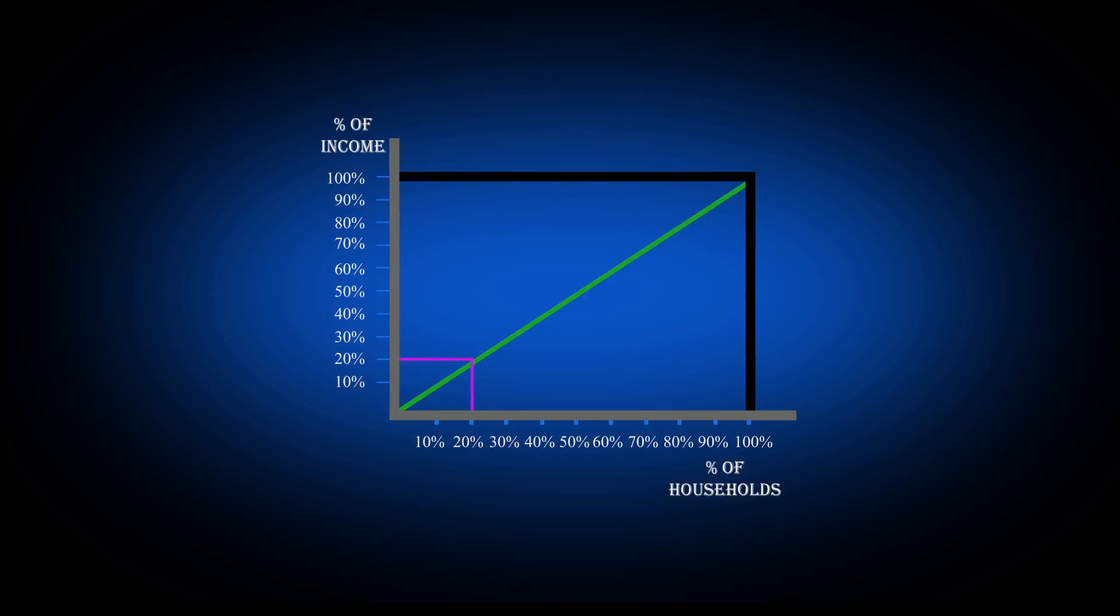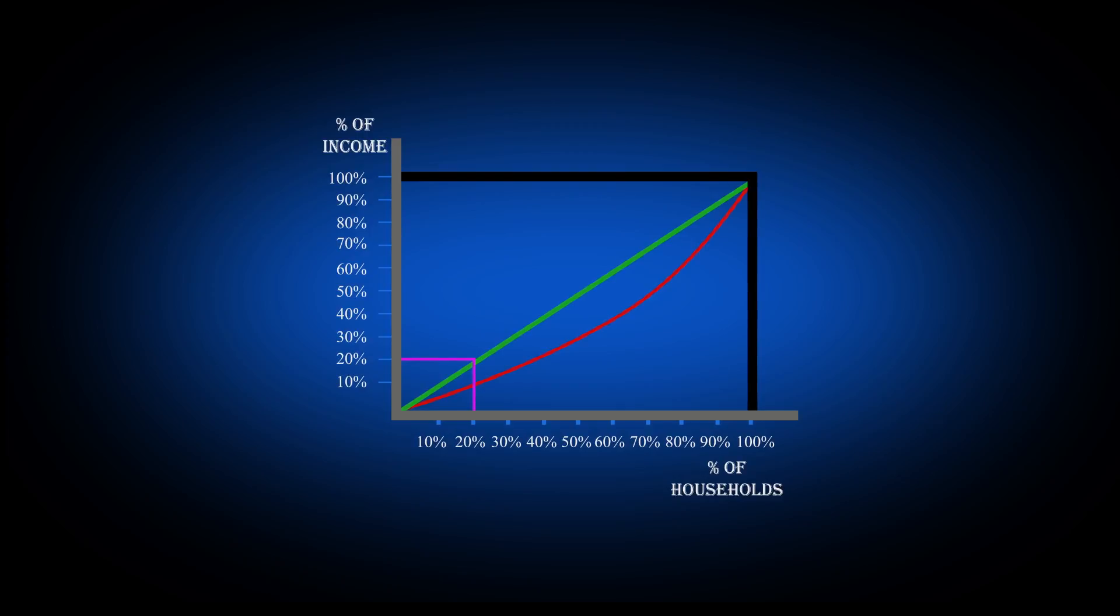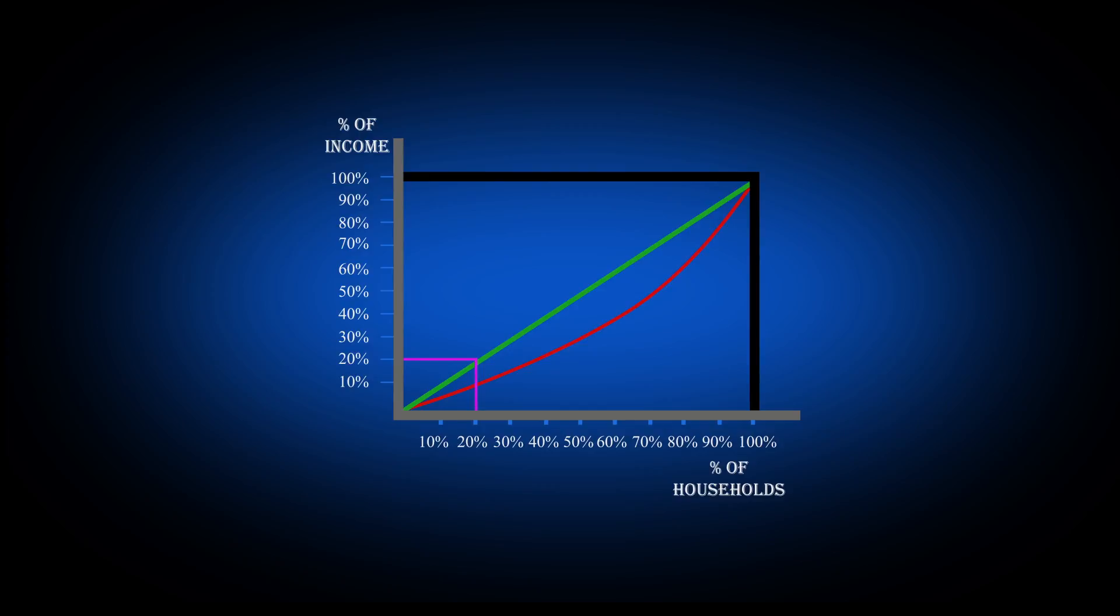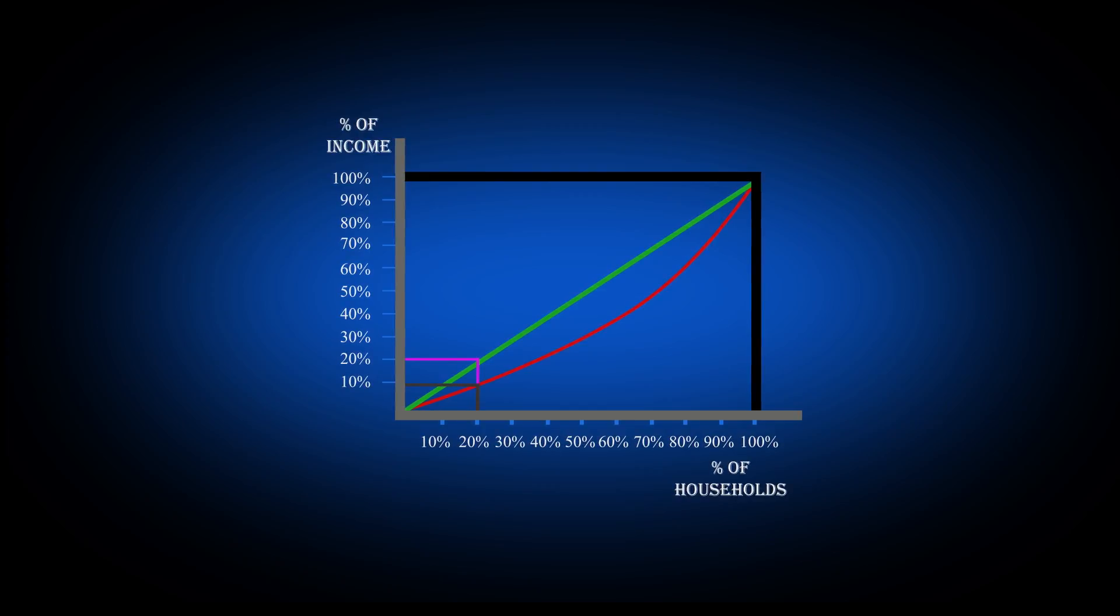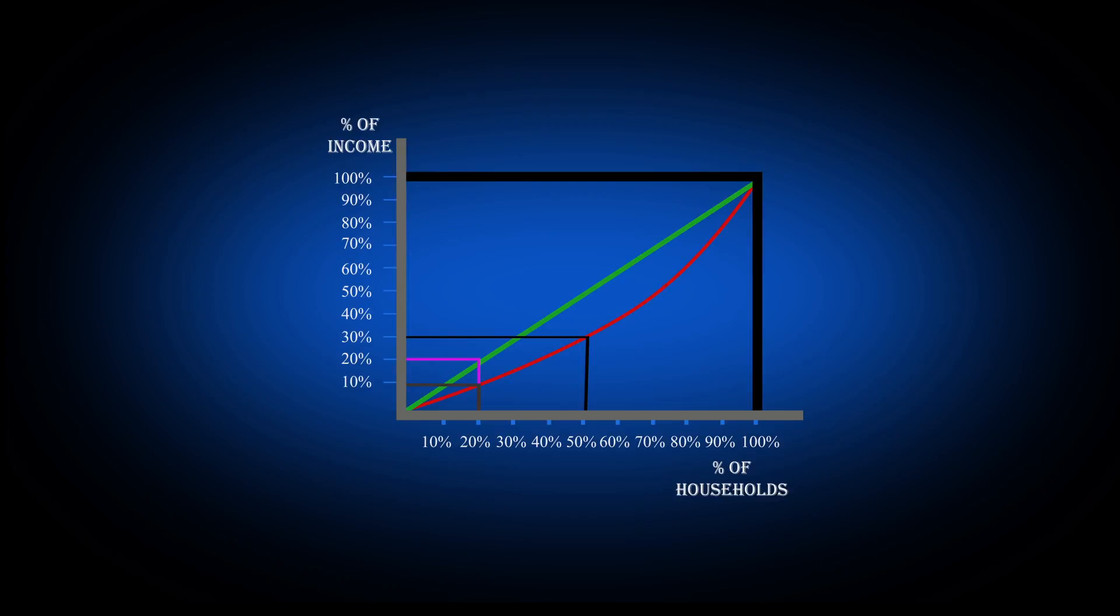What could be more realistic is the Lorenz curve, or in other words, the inequality curve, which indicates that 20% of the households holds less than 10% of the income, while half of the population holds only 30% of the income.